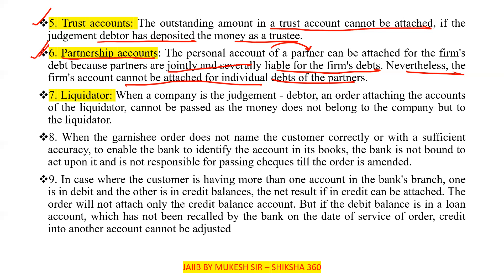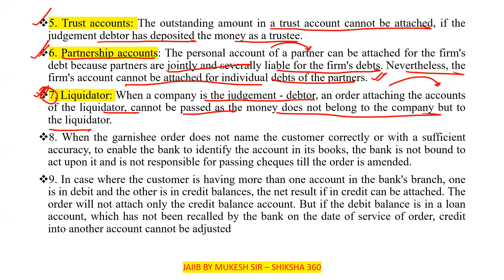The seventh point is the liquidator. When a company is winding up and is a judgment debtor, an order attaching the accounts of the liquidator cannot be passed, because the money does not belong to the company but to the liquidator.